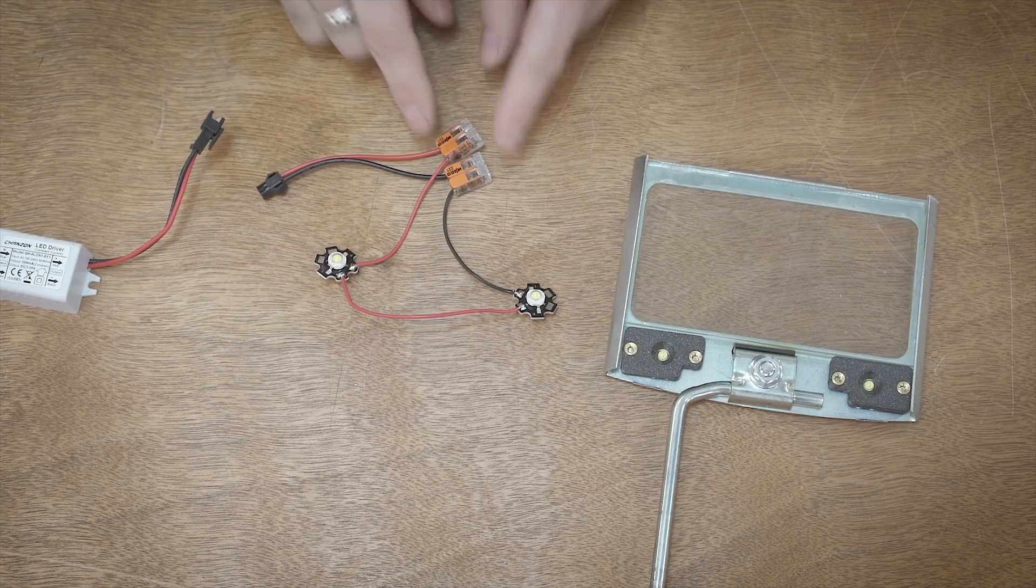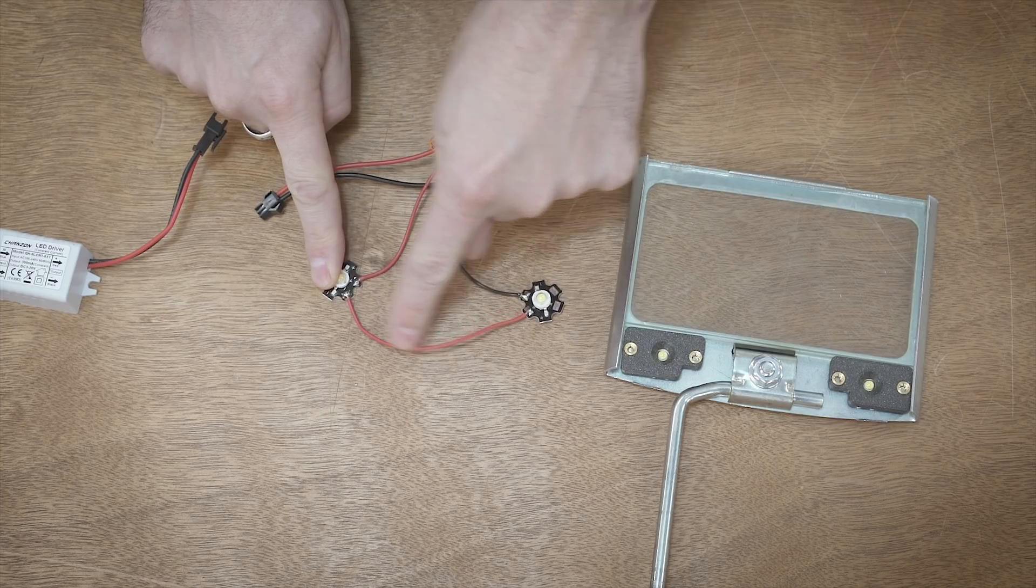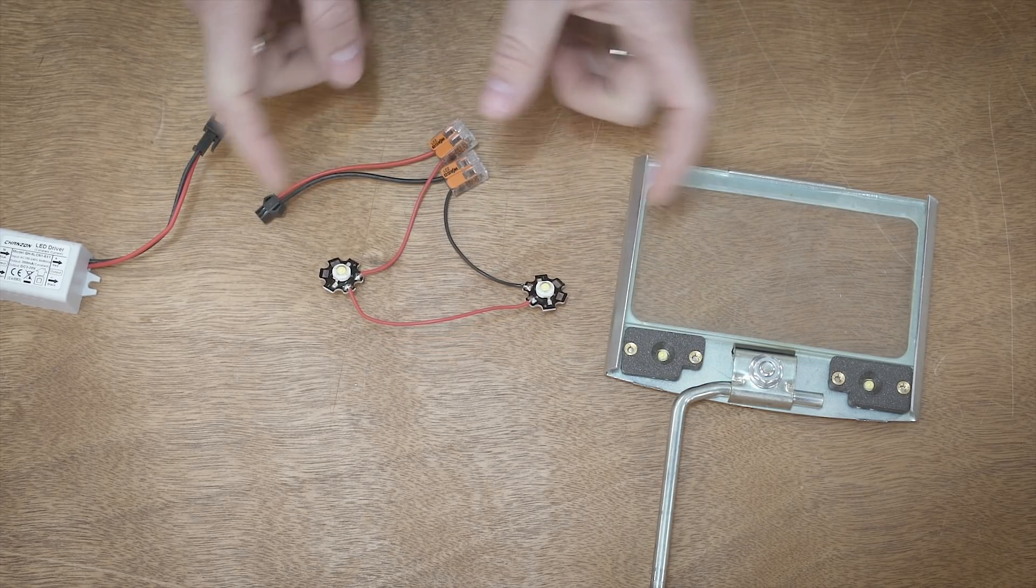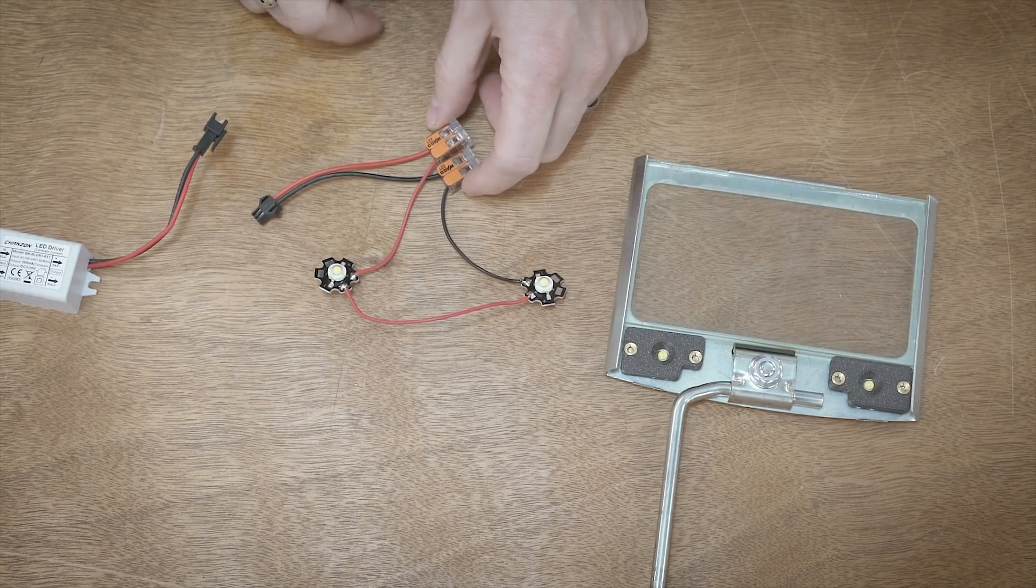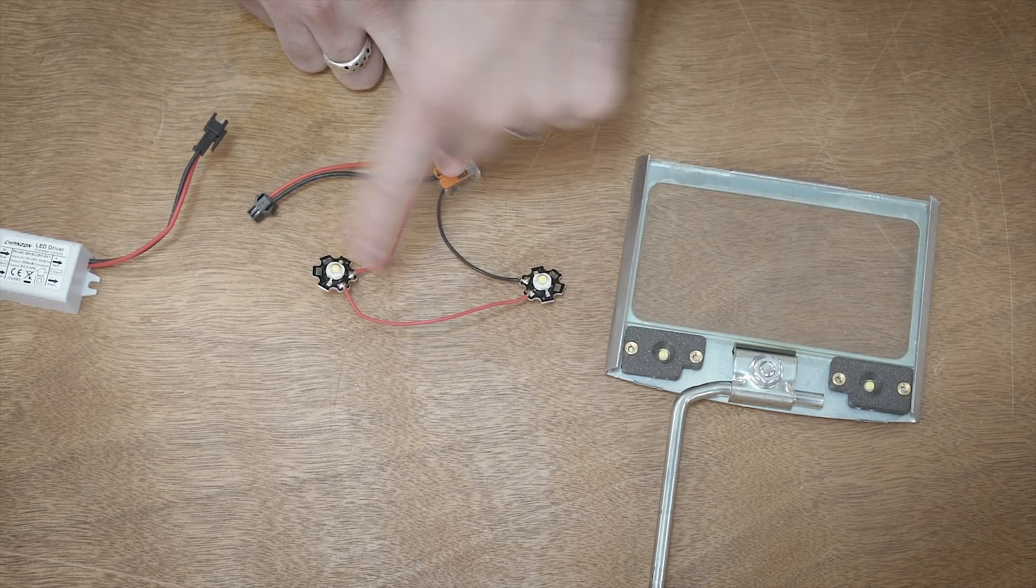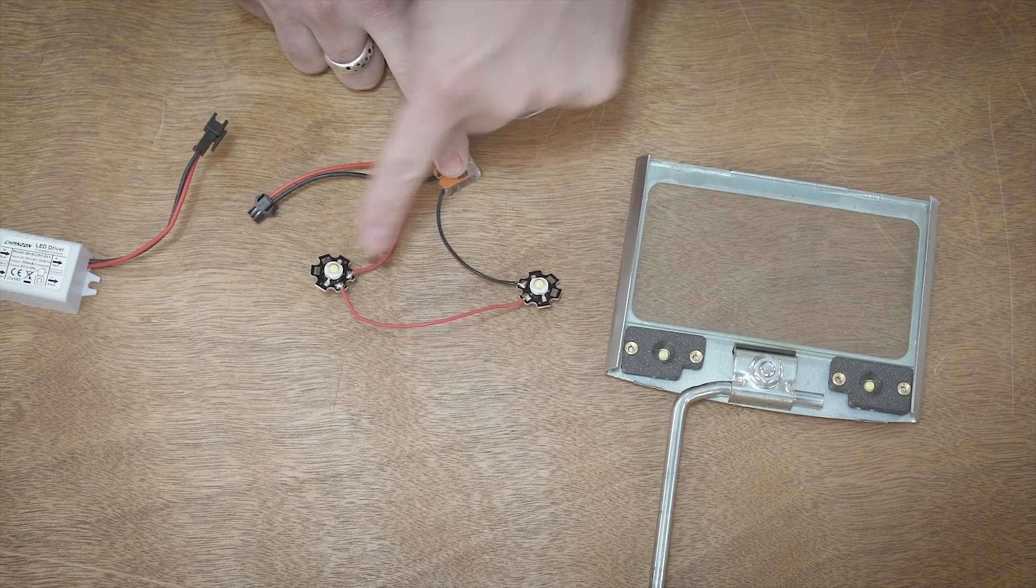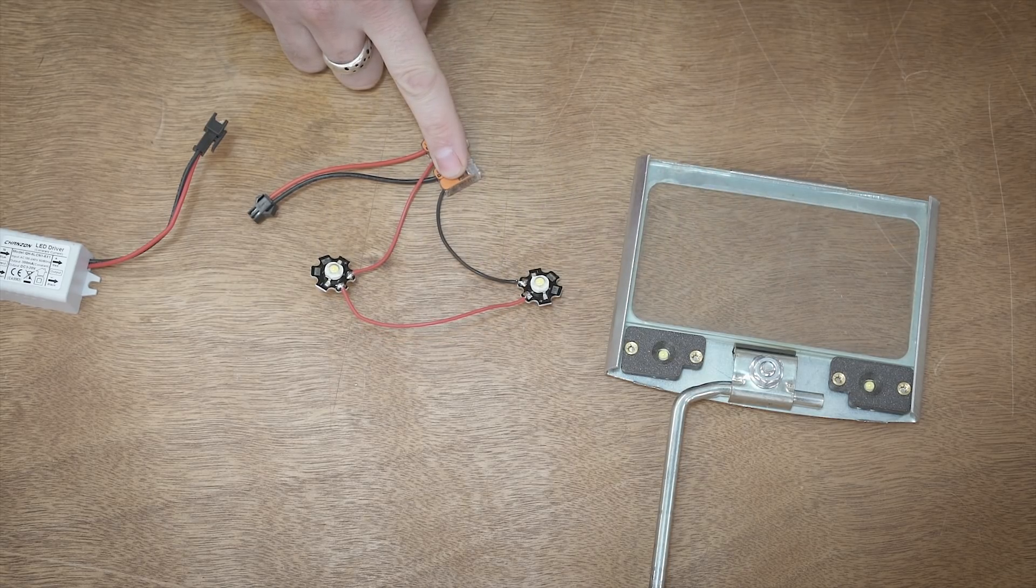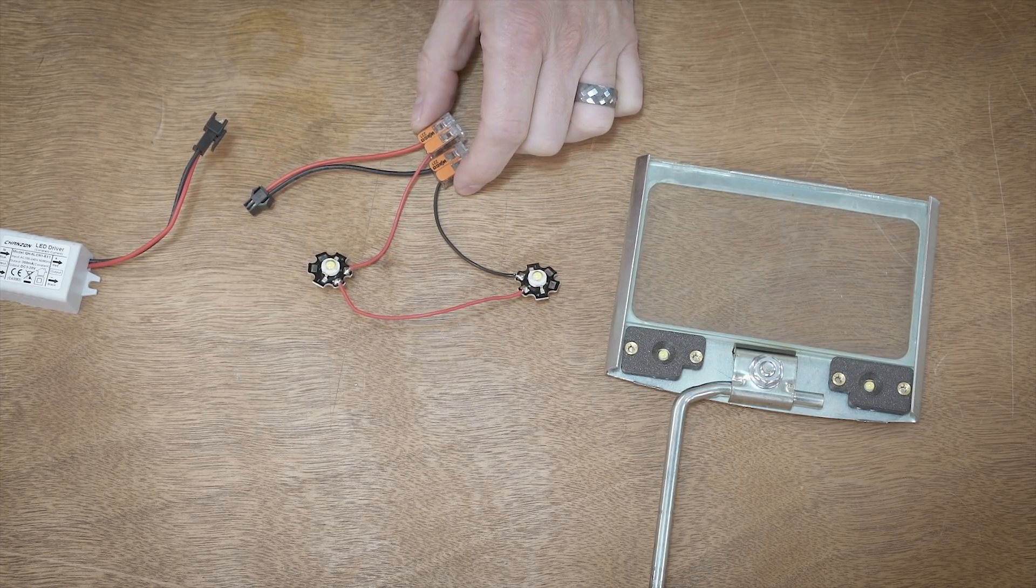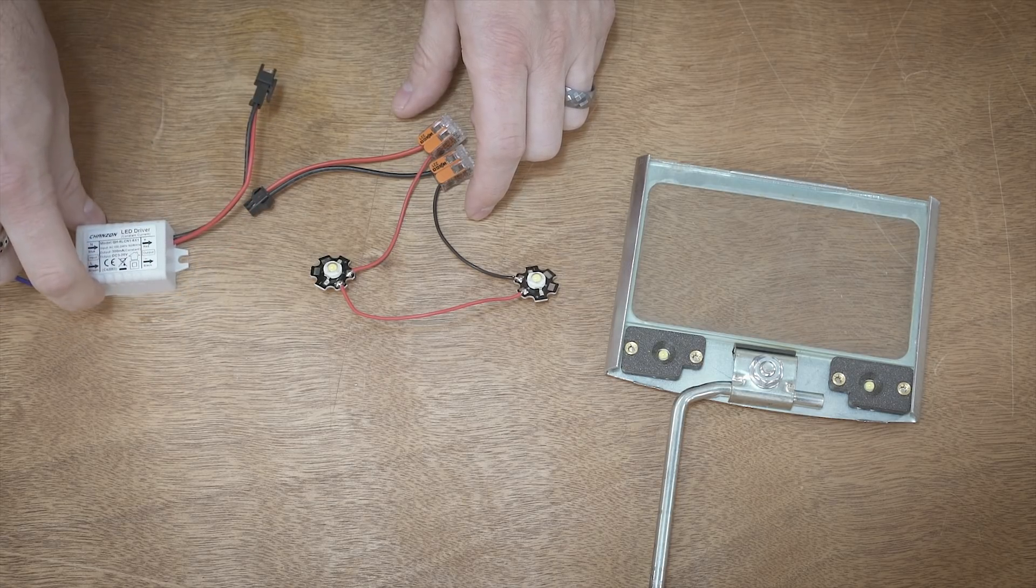The interesting thing to note about a driver like this is you can connect multiple LEDs, you just need to connect them in series. We've got the positive lead going to the positive, then we jump the negative over to the positive, and then the negative back. This series connection allows us to string multiple of these in line, and that whole string will always get 300 milliamps, and the voltage will fluctuate so we can properly drive these.